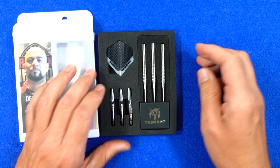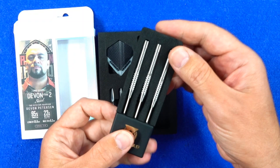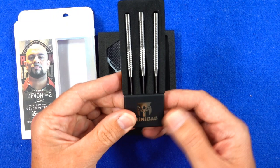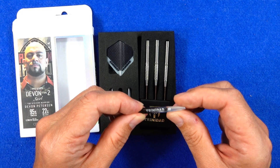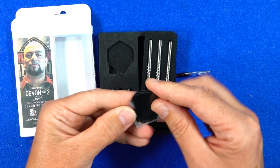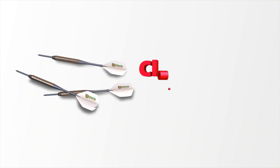Inside there's a foam insert holding everything in place. On the right hand side it's got an extra insert protecting the barrels. Nice looking barrels with chunky points. It comes with Trinidad in-between polycarbonate stems and Trinidad standard shape flights.